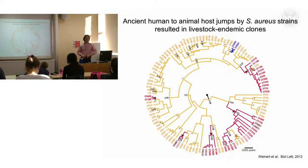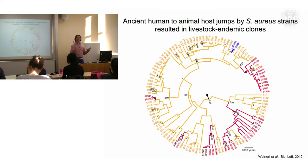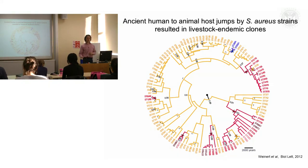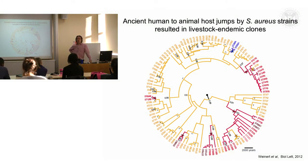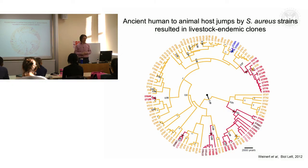Because this tree is based on multi-locus sequence typing data — about three and a half kilobases of sequence data — and because we have a time frame using a mutation rate calculated for the Staph aureus species, we can estimate when these host jump events happened. The earliest we predict occurred about five and a half thousand years ago, which fits well with estimates of when domestication and the spread of agriculture first happened in the Neolithic era — when there were many more opportunities for cross-species host jumps between humans and livestock living in the same environments.